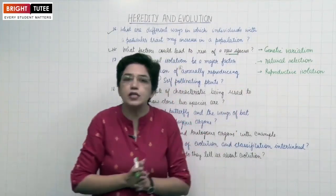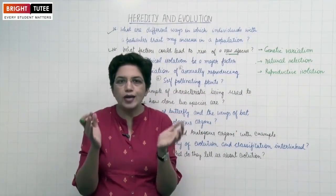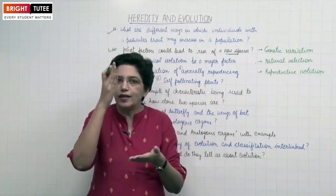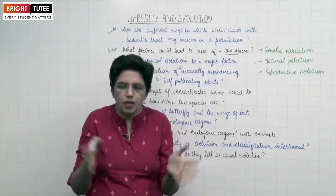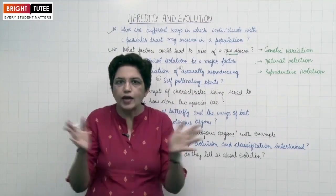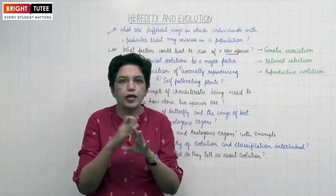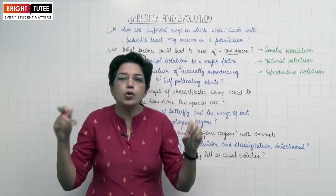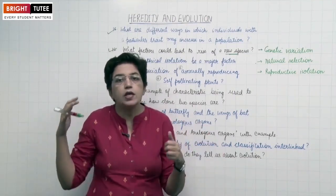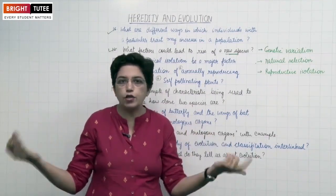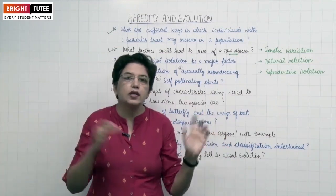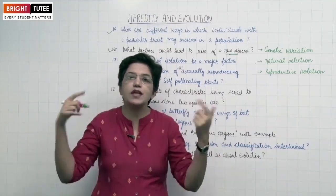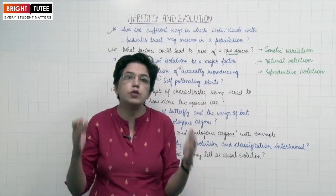Third is reproductive isolation. Suppose a few organisms of the same species were living together and able to reproduce among themselves. If a natural barrier arises — such as a hill, a crack in the earth, a sea, or a river — the organisms are separated and cannot reproduce among themselves. Now these two groups will show different kinds of variations, and over the years this will give rise to two different kinds of species, as they will no longer be able to reproduce among themselves.